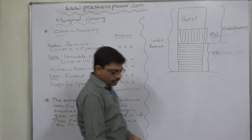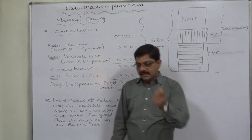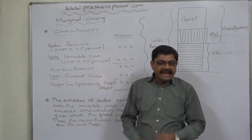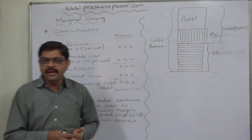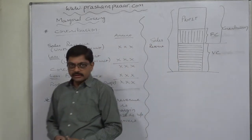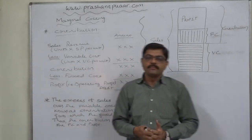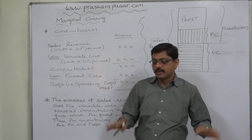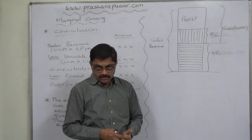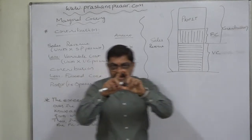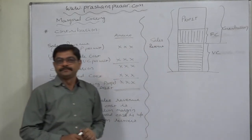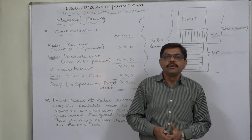Let us take an example of a product line made up of two or more products where any one product is not performing well compared to the others. Some directors or managers may propose that we should drop that product. But it is not that easy — for the product which is not performing well, we first have to answer: is that product earning a contribution? If so, there is no need to discontinue that product.